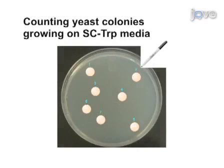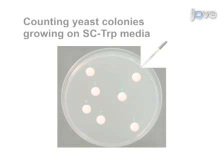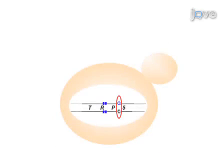Next, yeast colonies growing on the selective media are counted in order to ascertain the frequency of gene correction by the RNA-containing oligo. Results are obtained that reveal the transfer of genetic information from the RNA tract of the oligo to the mutated marker gene in the yeast genome.